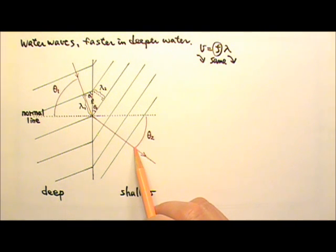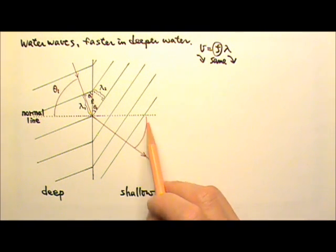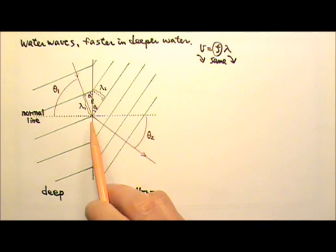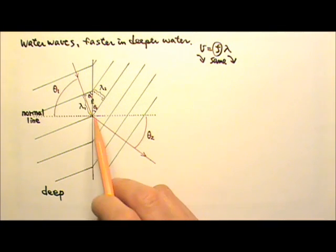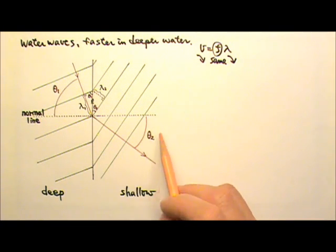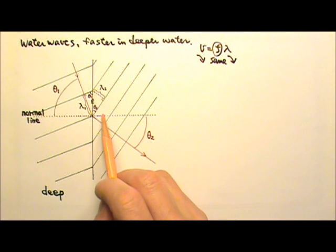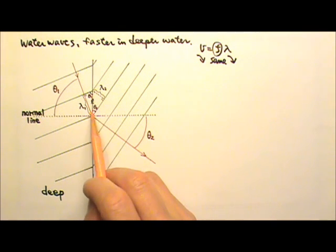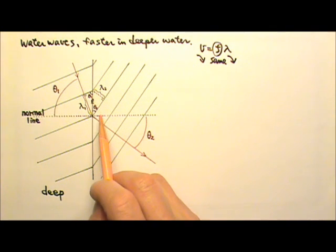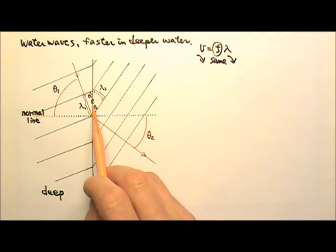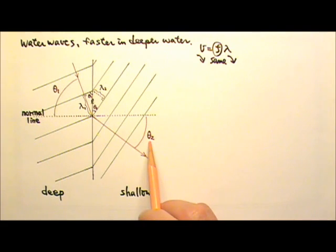This angle here is theta 2, which is the angle of refraction. It's the angle between the refracted ray and the normal line. Theta 2 plus the angle here equals 90 degrees, and this angle plus that angle also equals 90 degrees. So the angle over there must equal theta 2.